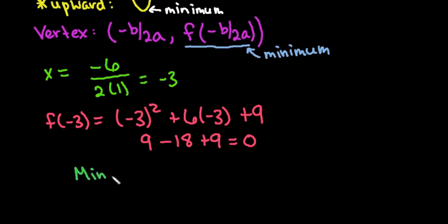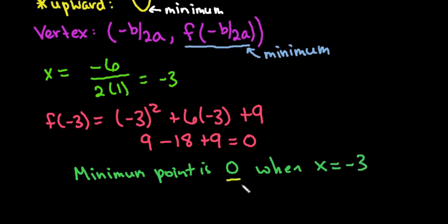So the minimum is 0 when x equals negative 3. But the actual minimum point is 0 because your y coordinate is what determines the up and down movement. As always, thanks for watching. If you have any questions, please let me know.